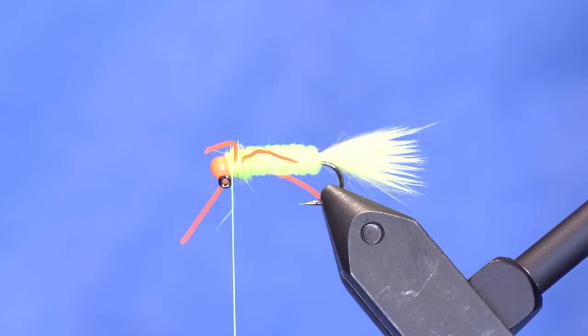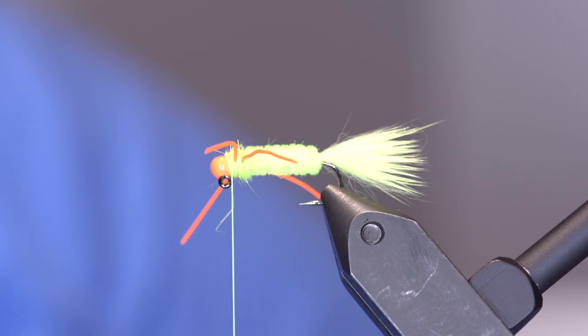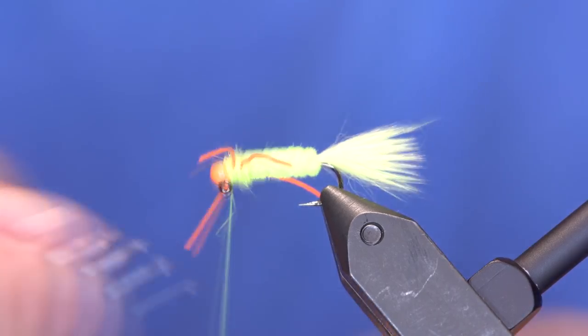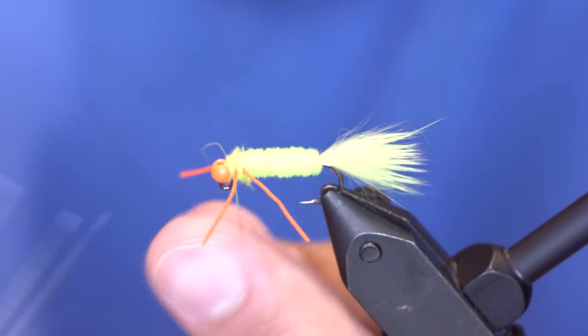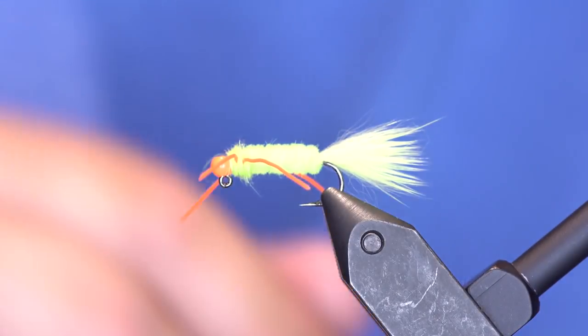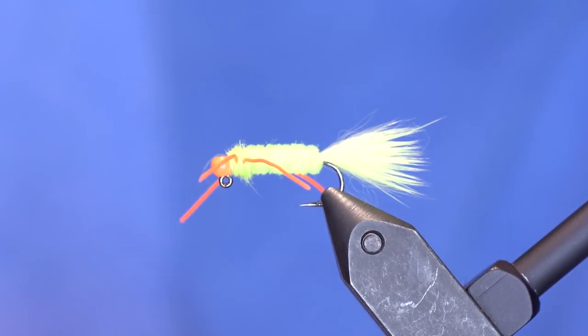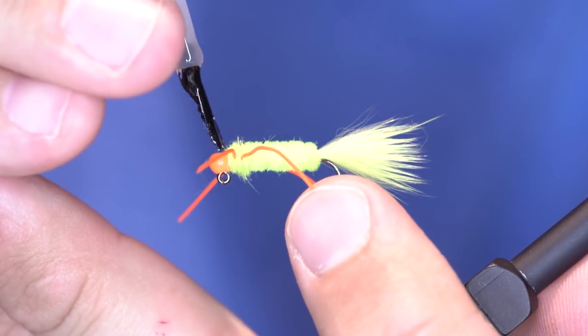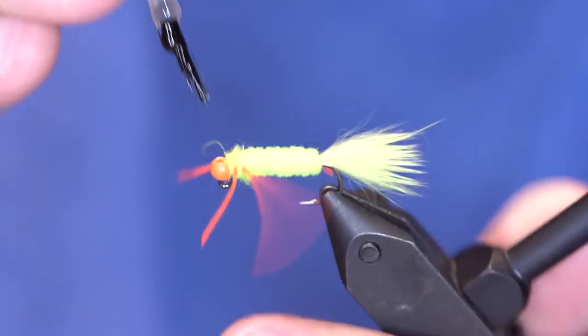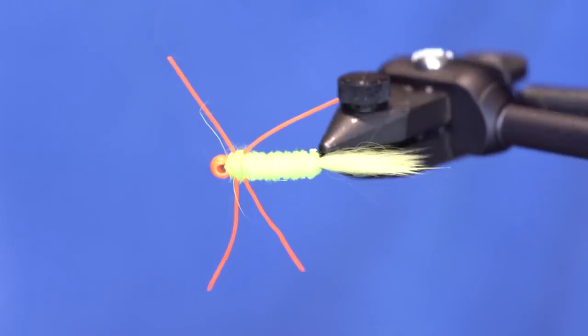And then find your whip finisher. Curtis will play some reggae music while I look for it. Final step is just to throw a little bit of head cement on there right in that bead in the hole, and we are good.